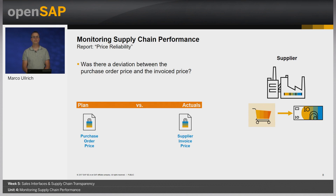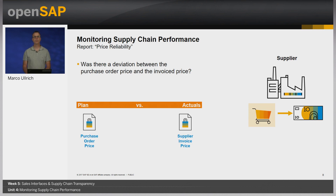The report Price Reliability in Purchasing is a further opportunity to analyze and, if necessary, react and adjust. It shows a comparison of all products purchased from one or more selected suppliers and displays the deviation between the purchase order price and the invoiced price. For each product, the report calculates an average purchase order price and an average invoice price and compares these over a specified period, displaying the price deviation as an absolute value and as a percentage. It has two pre-delivered views: price reliability per supplier and price reliability per product.